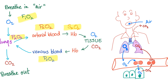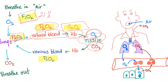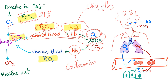Let's review normal physiology. You breathe in air — FiO2 is normally 21%. Oxygen goes to the lungs; in the alveoli it is called PAO2. It passes to the arterial blood as PaO2, then binds hemoglobin as SaO2. It jumps to the tissue, which uses oxygen for the electron transport chain, producing CO2, which binds hemoglobin as carbaminohemoglobin. That goes to the venous blood as PVO2, then back to the lungs where you exhale CO2.